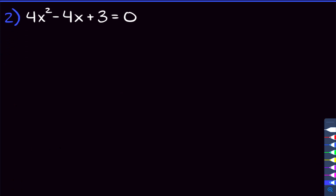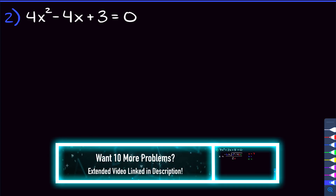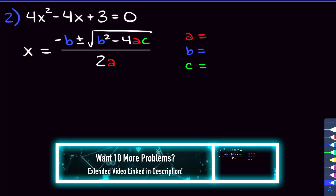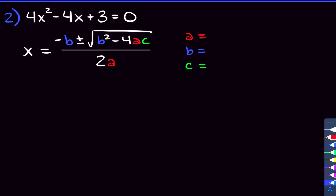For our next problem, we're going to be doing 4x squared minus 4x plus 3 is equal to 0. You can try to solve this with factoring by grouping or something like that, but you're just not going to be able to. So we're going to turn to the quadratic formula. Let's find our a, b, and c. Our a — the number on x squared — is 4. B, our number on x, is negative 4. And c, our number without the x, is 3.